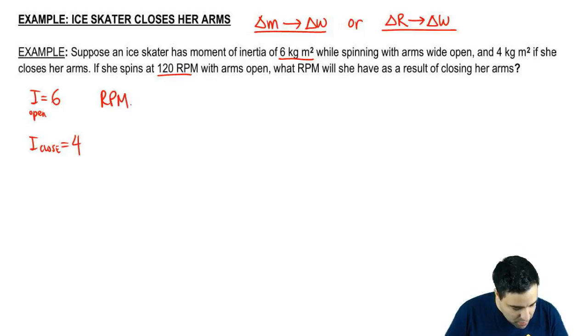If she spins at 120 RPM with her arms open, so RPM open is 120, what RPM will she have as a result of closing her arms? What will be RPM close?